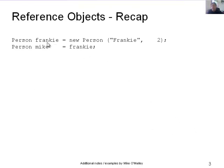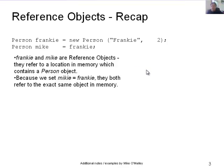When we declare a person — for example, Frankie — we write: person Frankie equals new Person, passing through a string and an age. So the object Frankie will have a name of Frankie and an age of two. Then we can declare another person object Mike and set him equal to Frankie. So Frankie and Mike are reference objects — they refer to a location in memory which contains a person object, and because we set Mike equal to Frankie, they both refer to the exact same location in memory.